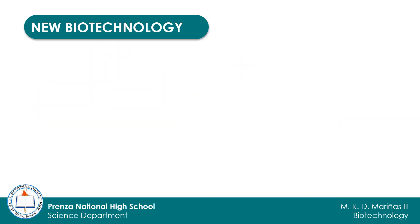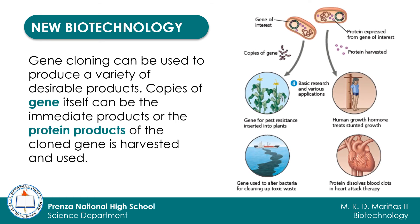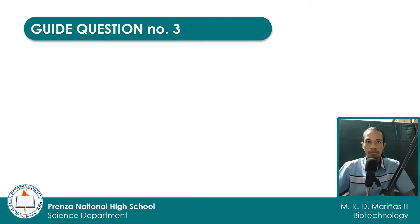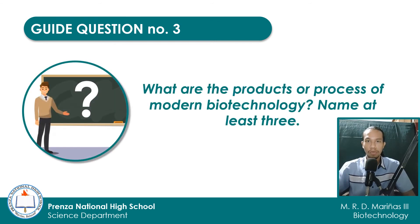Gene cloning can be used to produce a variety of desirable products. Copies of the gene itself can be the immediate products, or the protein products of the cloned gene are harvested and used. We will have an in-depth discussion on how recombinant DNA technology is able to produce this multitude of products. Before we proceed to the next part of our lesson, can you give me at least three products of new biotechnology? You may write your answer on the space provided in your activity sheet.